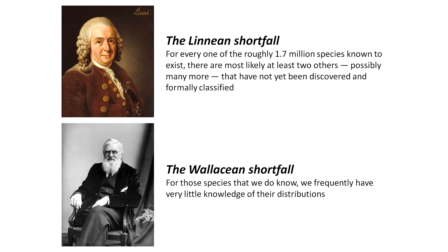So, classic problems in terms of our knowledge of biodiversity on the planet. We refer to them often as the Linnaean shortfall or the Wallacean shortfall. The Linnaean shortfall is that we don't actually know that many of the species on the planet. For every one of the roughly 1.5 to 1.7 million species known to exist, there are most likely at least two others, possibly an awful lot more, that have yet to be discovered and formally classified.